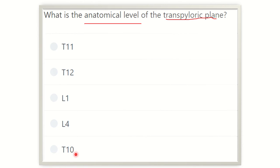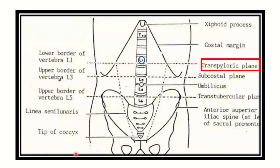Now we have to find out the transpyloric level first, then the vertebral level of the transpyloric plane. Here we can see the lower part of the chest and all of the abdomen and pelvis, and here is the pelvic bone. We can see different landmarks — this is the xiphoid process, here is the costal margin, and here our transpyloric plane is located. This line passes through the lumbar 1 vertebral level.